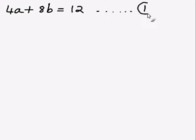4a plus 8b equals 12. I'll label that as equation number 1. And also 6a minus 4b equals negative 14. I'm going to label that as equation number 2.